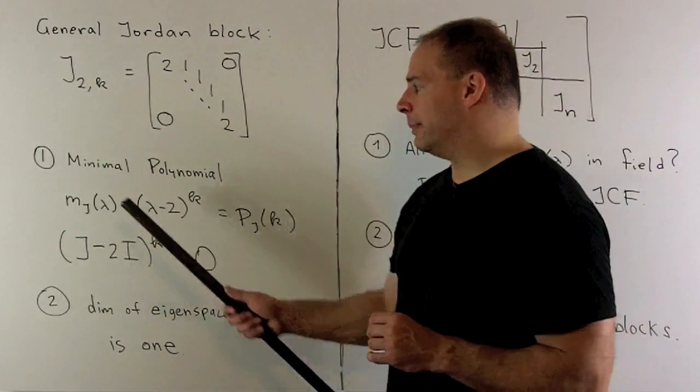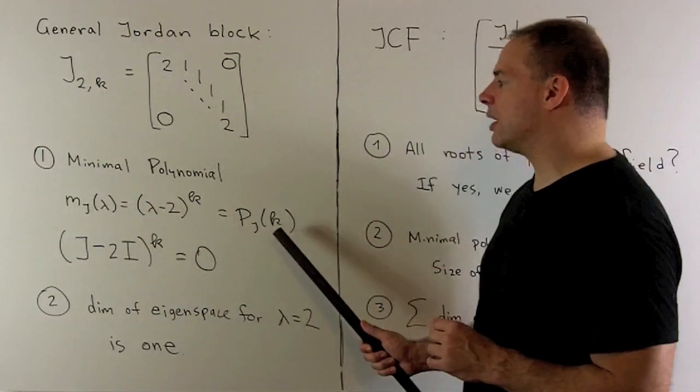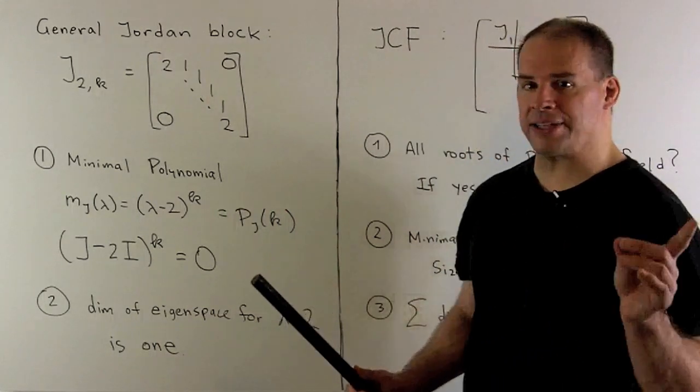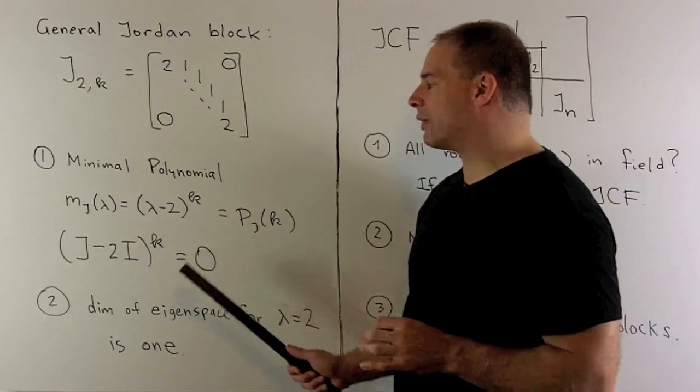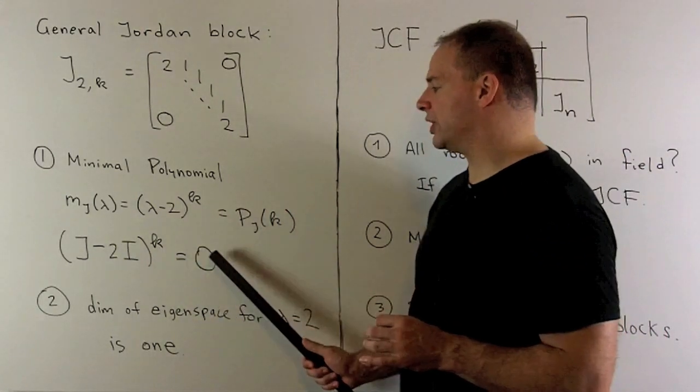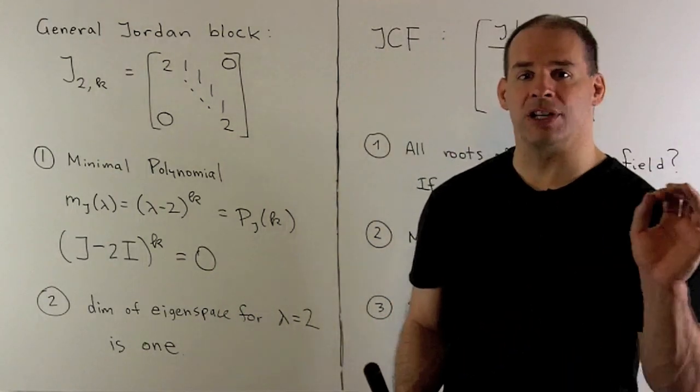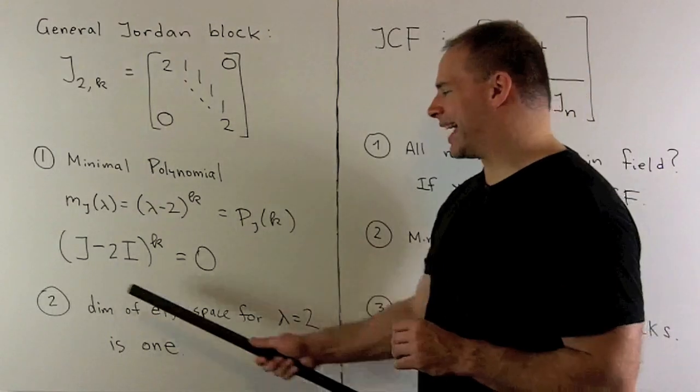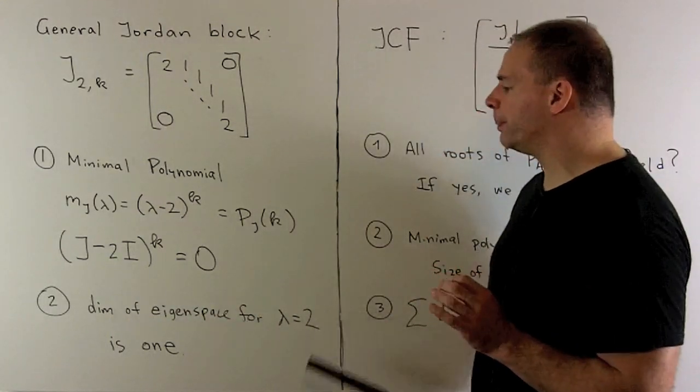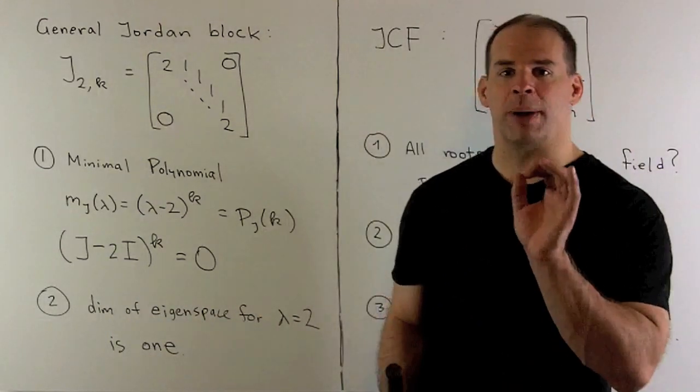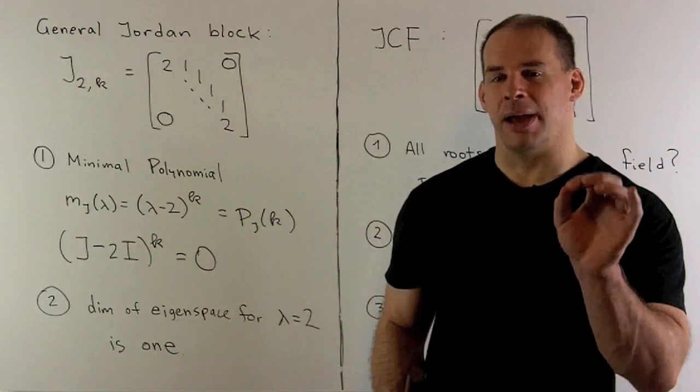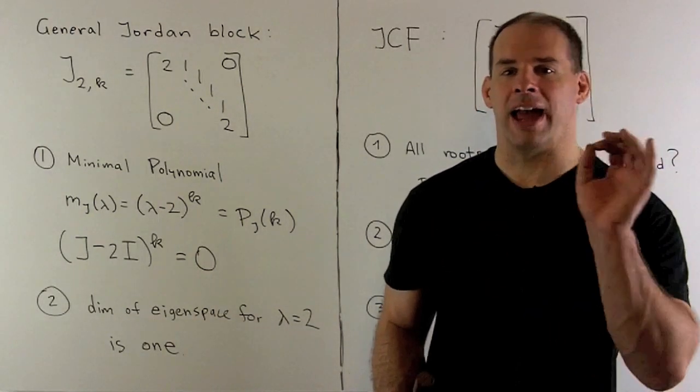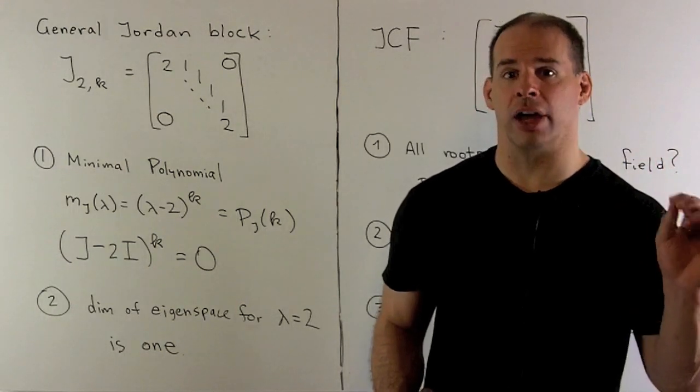Here we'll have the minimal polynomial is equal to the characteristic polynomial. In this case, it'll be lambda minus two to the kth power. That says j minus two i raised to the kth power is equal to zero, and not for any smaller exponent. Then we'll also have the dimension of the eigenspace for eigenvalue two is equal to one.